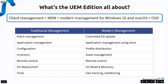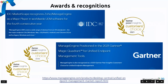For modern management, features include controlled OS updates, deploying apps from Microsoft Store or Apple Store, distributing profiles to modern devices, asset management, remote control, OS reset and recovery, and geo-tracking and geo-fencing capabilities. Combining all of these, Desktop Central provides unified endpoint management. These are the various awards achieved in recent years — visit the website below for more information.